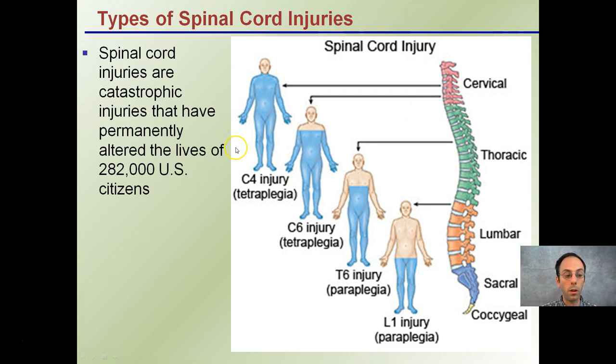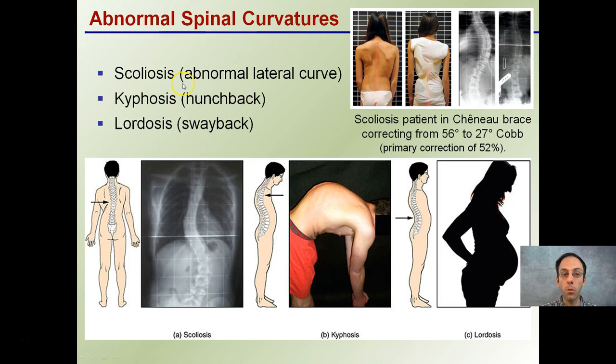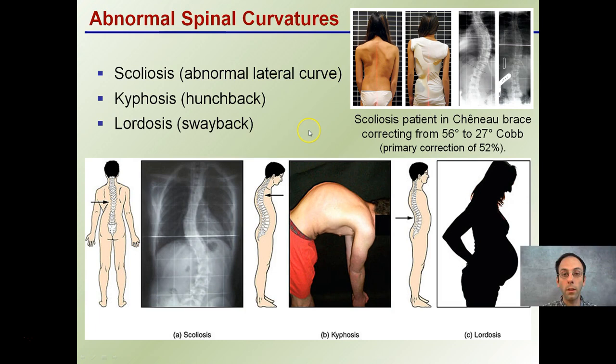Some abnormal spine curvatures: scoliosis is an abnormal lateral curve in the spine. Kyphosis is a hunchback appearance — an exaggerated curve. Lordosis is swayback, which typically occurs with pregnant individuals who have that odd bend to their spine. Kyphosis and lordosis refer to bending viewed from the side, while scoliosis is a left-to-right curvature. Scoliosis can be corrected with a brace that helps reduce the degree of curvature and allows the individual to live a closer to normal life.